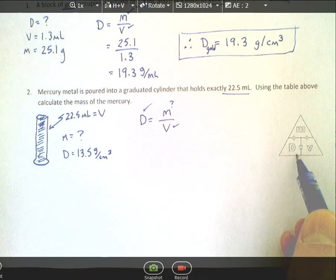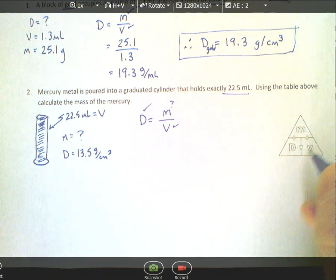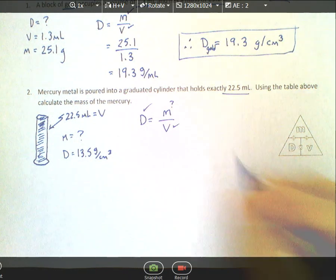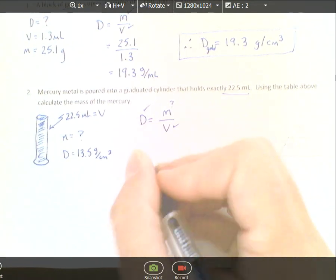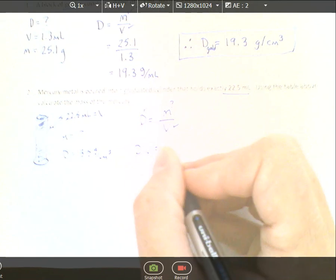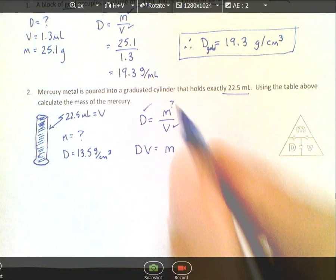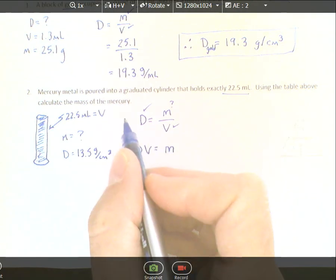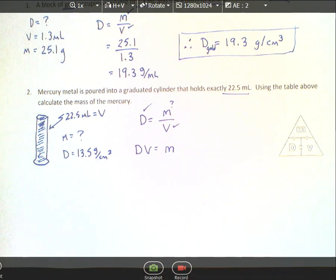You can use this triangle to figure out how to rearrange the formula if you're stuck. If you're trying to find the mass, it says take the density and multiply it by the volume. If we rearrange this formula, we multiply the volume to the other side. If I multiply this side by volume and that side by volume, it divides out on one side and moves to the other, giving density times volume. Isolating equations is extremely important.